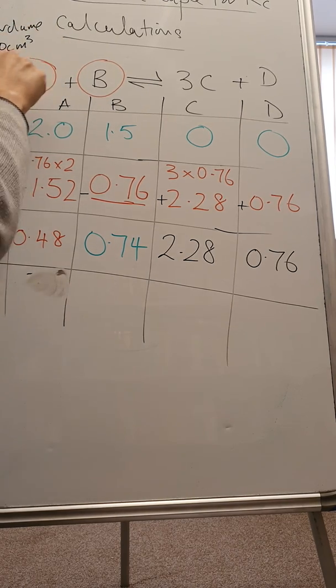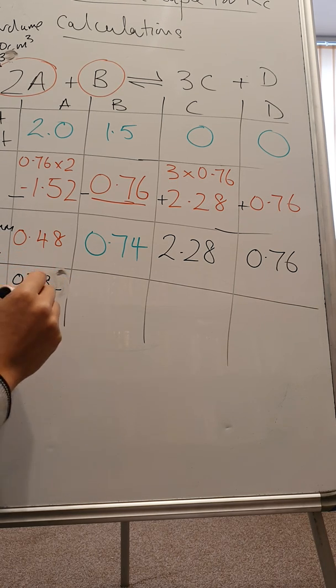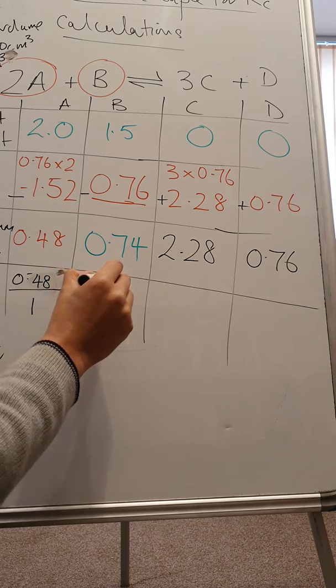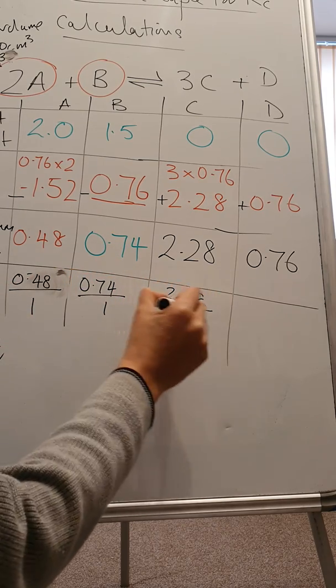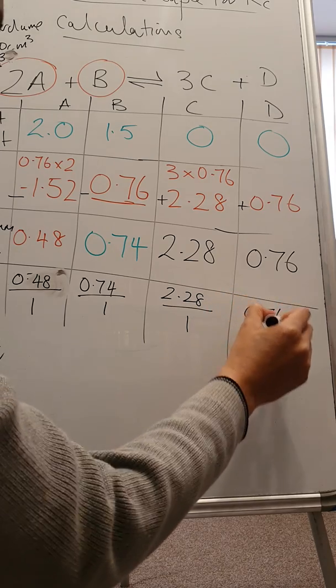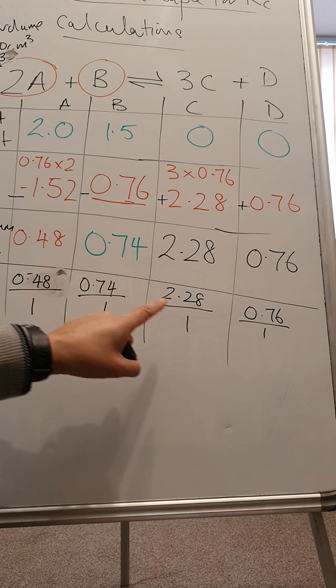So now I'm going to work out equilibrium concentration, square brackets, n over v. So I'm going to divide 0.48 by 1, 0.74 by 1, 2.28 by 1, 0.76 by 1. That is my equilibrium concentration.